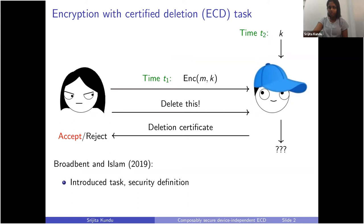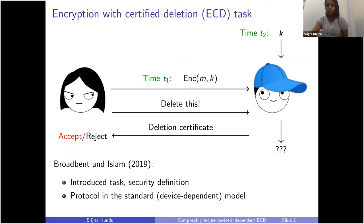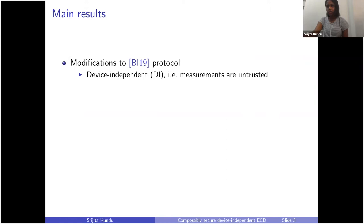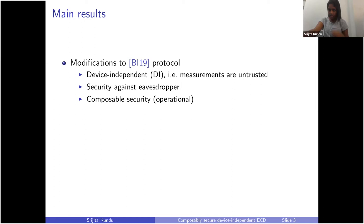This task was introduced by Broadbent and Islam in 2019. They gave proper security definitions for it, but the protocol they gave wasn't in the standard device-independent model. Our contributions are that we gave an entirely new protocol such that it's device independent — that is, the states and measurements used in the protocol don't have to be trusted. We also provide security against a potential third party, which was not considered in the original task description. The security definition we use is also composable, which is an operational type of security definition, and it's stronger in a sense than the Broadbent and Islam security definition.